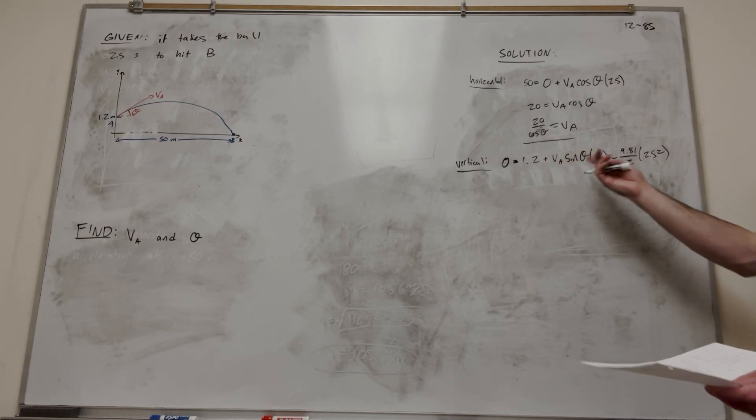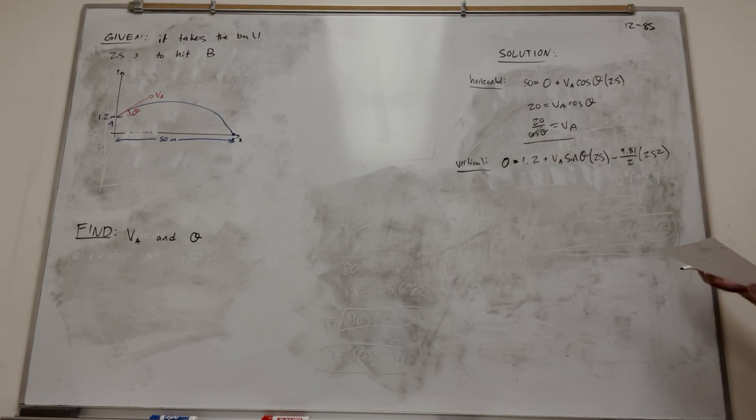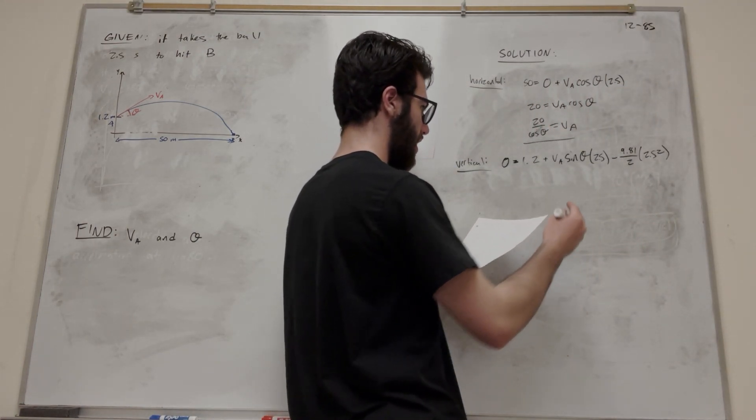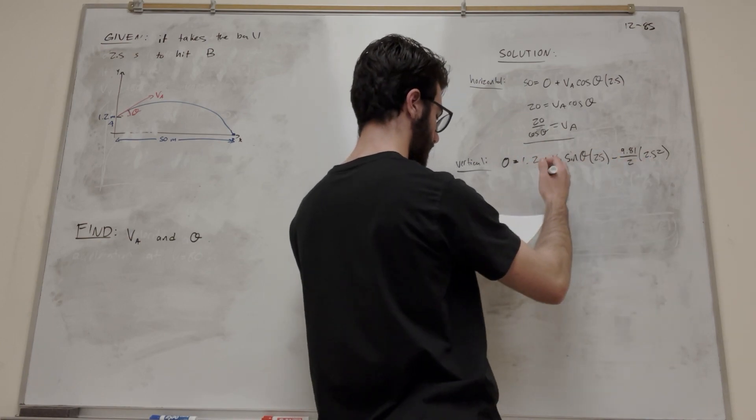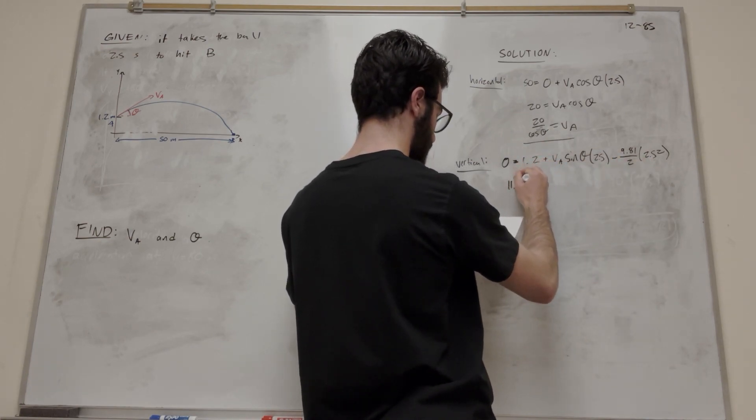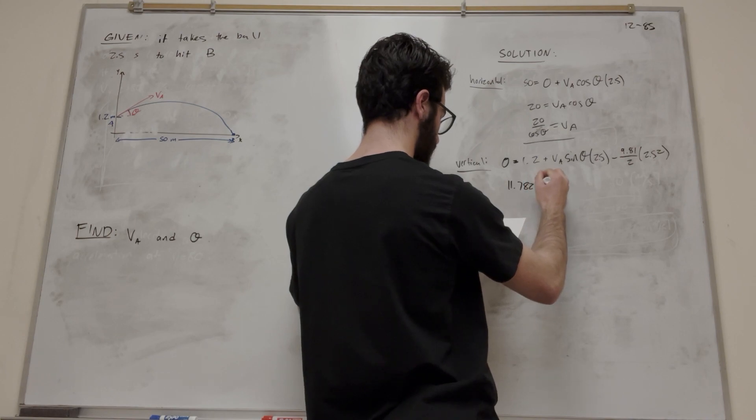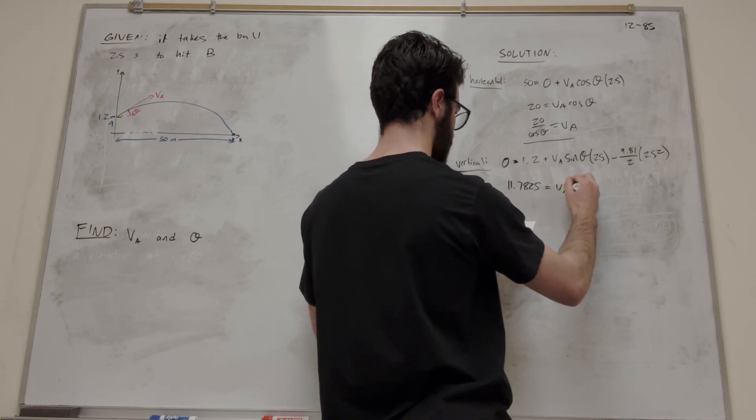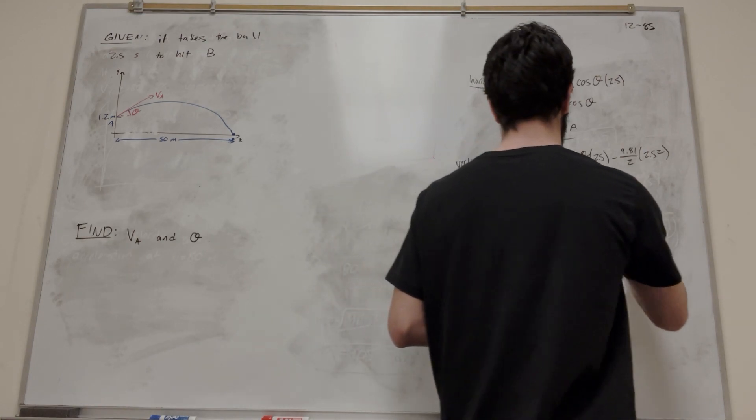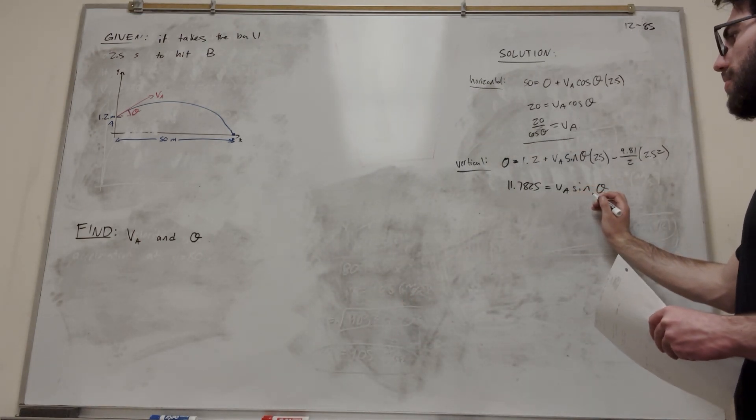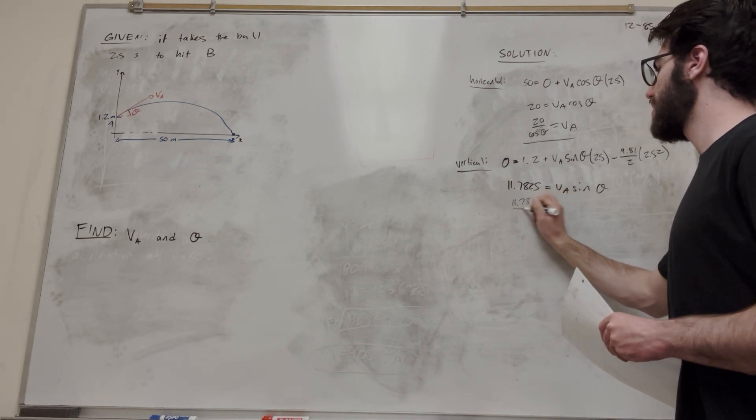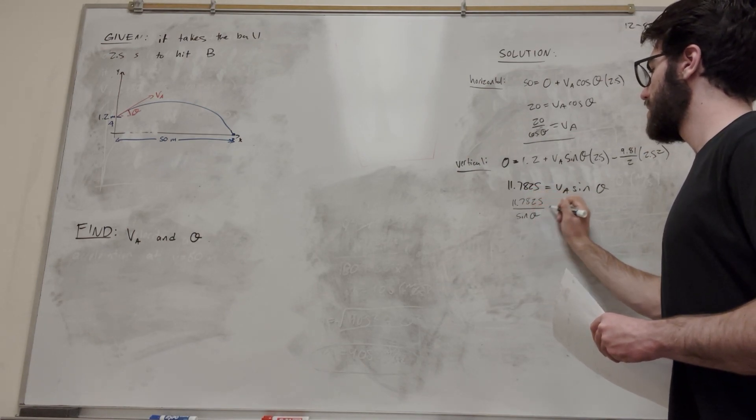So then again, we're left with this equation of two unknowns. So what I'm going to do is I'm just going to simplify it. I trust you guys know how to do this kind of math on your own. But we're going to basically add these together and move them to the other side. We're going to get 11.7825 is equal to VA sine theta. And then, of course, we're going to want to move that sine theta over. So 11.7825 over sine of theta is equal to VA.